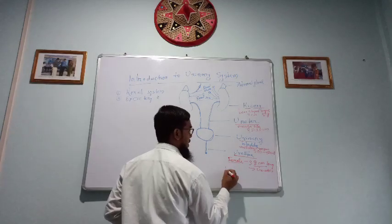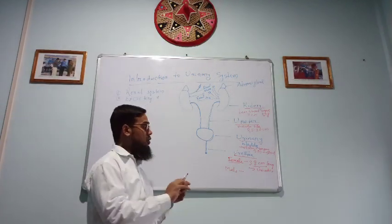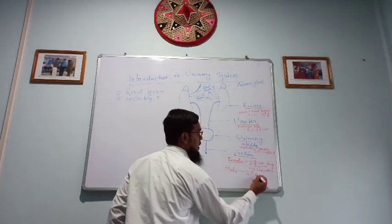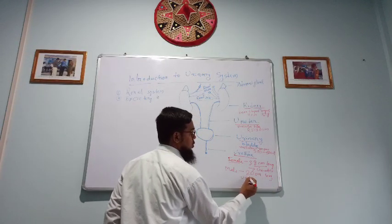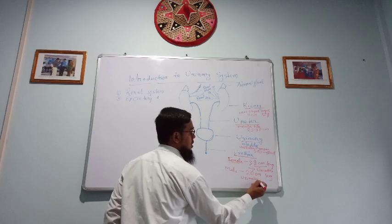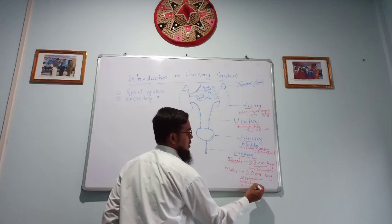In case of male, the length of urethra is about 20 cm long which performs two functions: urination plus ejaculation.